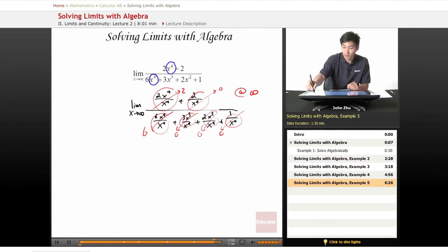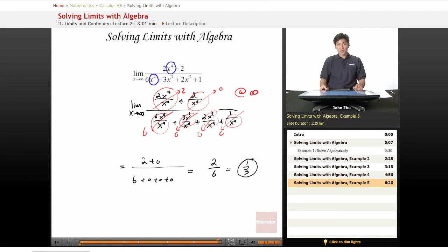So finally rewriting everything we get 2 plus 0 over 6 plus 0 plus 0 plus 0. Three zeros make one zero, so 2 over 6 or a third is our limit to the expression.